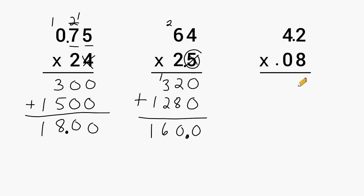Okay, let's go to this problem, which is 4 and 2 tenths multiplied by 8 hundredths. So we're going to multiply 8 times 2, which is 16. We carry the 1. 8 times 4 is 32, plus one more is 33.